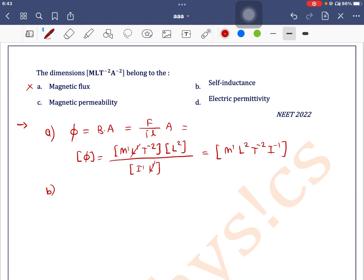What is the second option? Self-inductance. Now we know that self-inductance is equal to magnetic flux divided by current. So we can write, we can use result from option A, that is M¹L²T⁻²I⁻¹, minus one will be I⁻². So second is also incorrect.